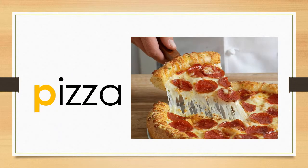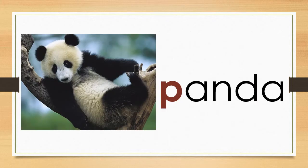The word pizza starts with the letter P. P, pizza, pizza. This animal is a panda. The word panda starts with the P. P, panda, panda.